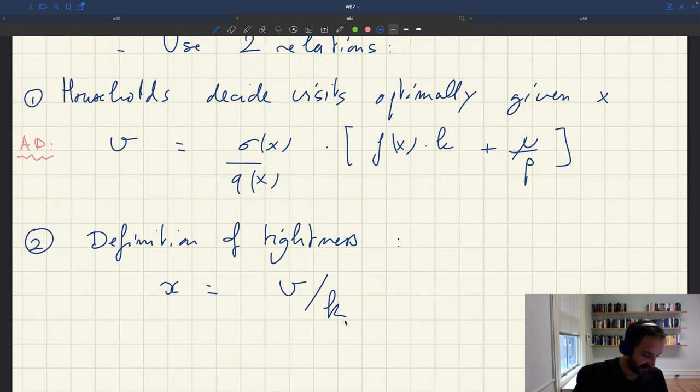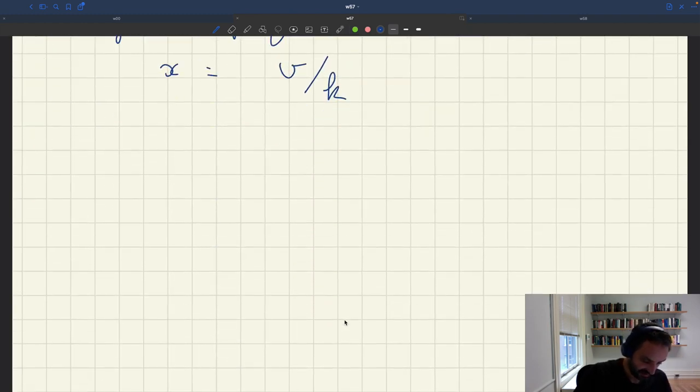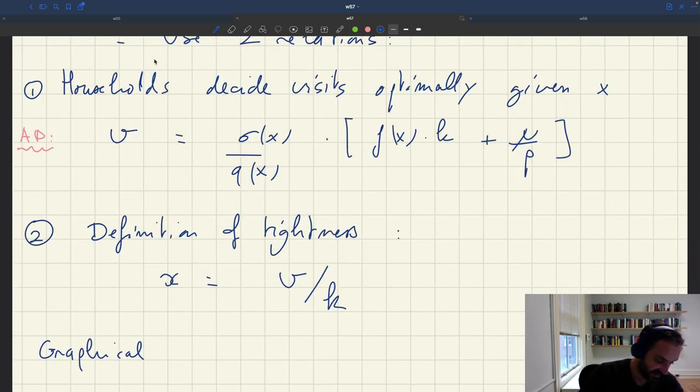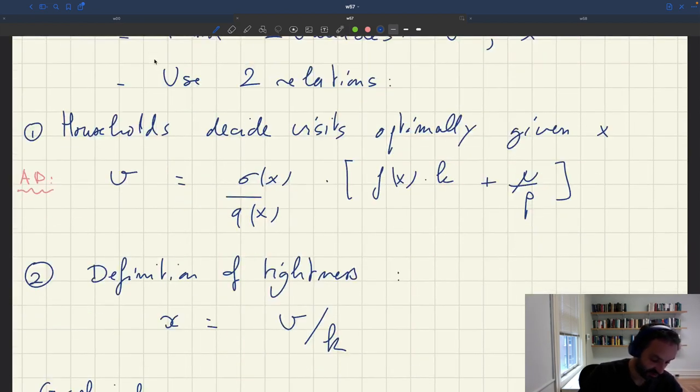The solution of the model is the tightness and number of visits that satisfies these two equations. You can see you have two equations, two variables, you should be able to figure out what is the solution if the system is well behaved.